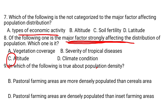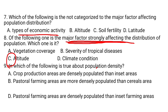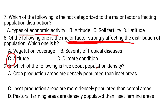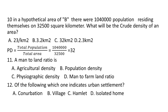Question number 9. Which of the following is true about population density? A. Crop production areas are more densely populated than inset areas. B. Pastoral farming areas are more densely populated than inset areas. C. Inset production areas are more densely populated than cereal areas. D. Pastoral farming areas are densely populated above inset farming areas. The correct answer is C — inset production areas are more densely populated than cereal production areas.